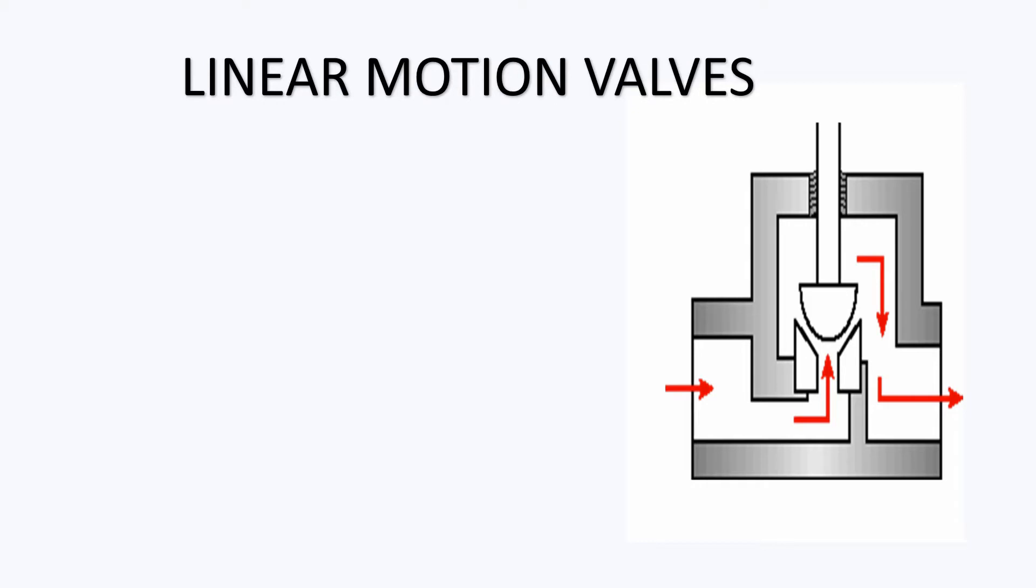This is basically the control valve diagram which represents the linear motion. You could see over here this is an example of a globe valve which is a single seater, and you could see the flow moves from upstream to downstream - inlet is towards the upwards and outlet towards the downwards.